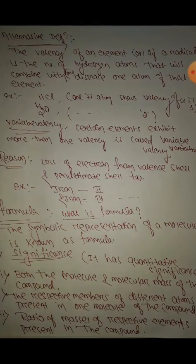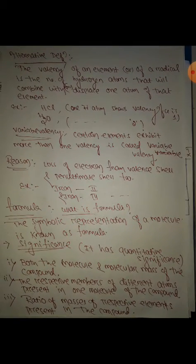The valency of an element or radical is the number of hydrogen atoms that will combine with or displace one atom of that element. Like HCl, only one atom of hydrogen is combined with chlorine, that's why the valency of chlorine is one. H2O: oxygen combines with two hydrogen atoms to form a molecule, so oxygen's valency is two.